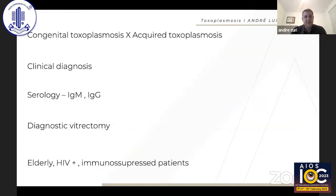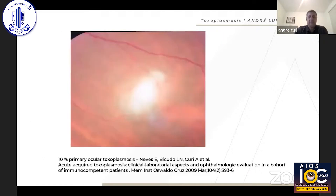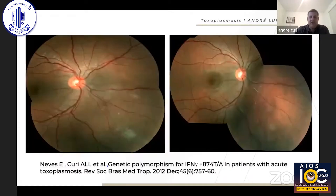Diagnosis is primarily clinical. Serology is more helpful to exclude the diagnosis than to confirm it — a positive IgG only indicates prior contact with toxoplasma, not active disease. Diagnostic vitrectomy is reserved for very difficult cases. It is important to pay special attention to elderly, HIV-positive, and immunosuppressed patients, as the clinical presentation can differ. A single focus of retinochoroiditis may suggest primary ocular toxoplasmosis, seen in about 10% of patients with positive IgM, following fever, rash, and lymphadenopathy.